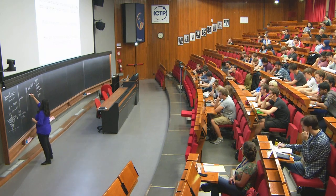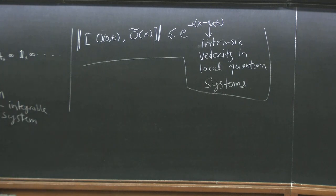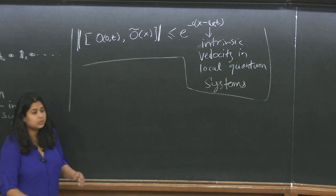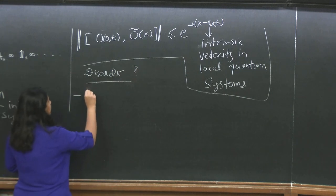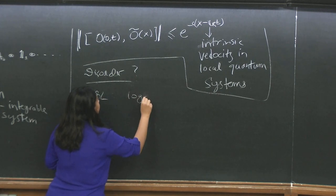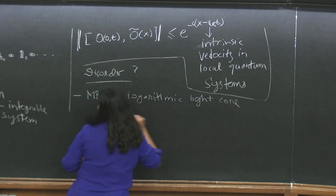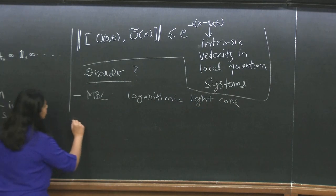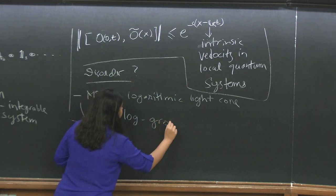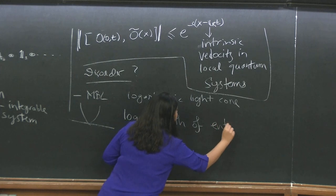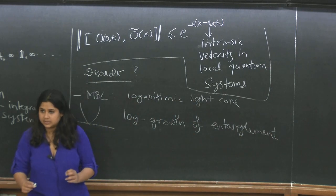As a contrast to the clean case — where you get ballistic operator spreading — in the many-body localized case you actually get a logarithmic light cone. Your operator spreads in a region growing only as log(t). This is connected with the logarithmic growth of entanglement, and has to do with the slow dephasing effects due to exponentially weak coupling between l-bits that I discussed last time.